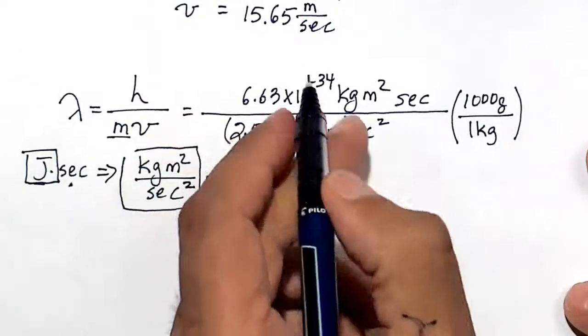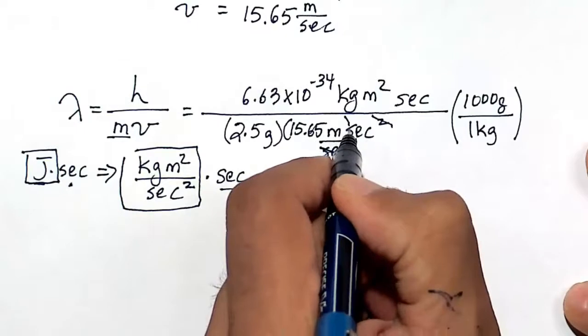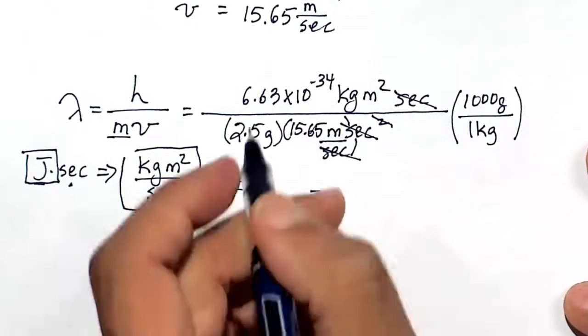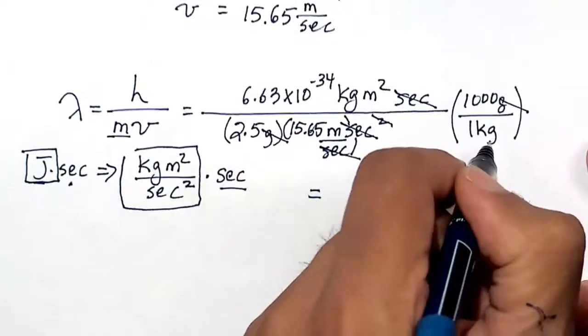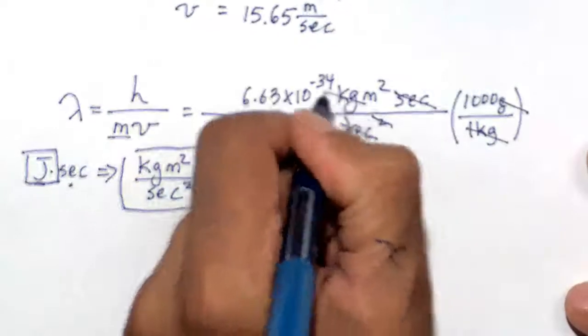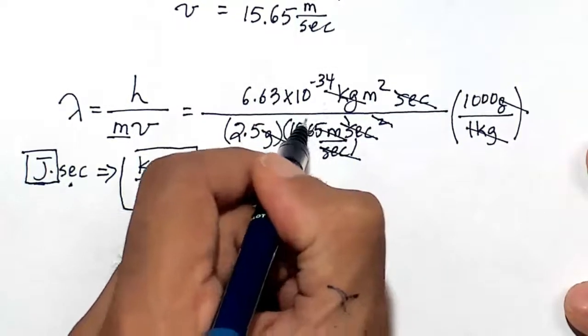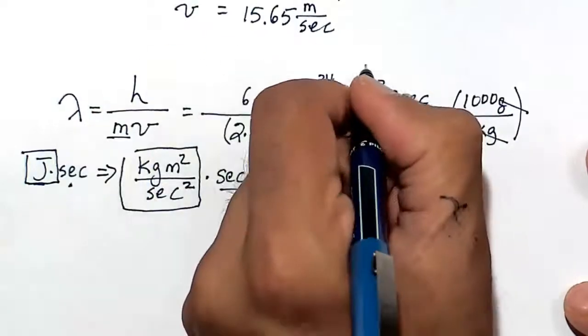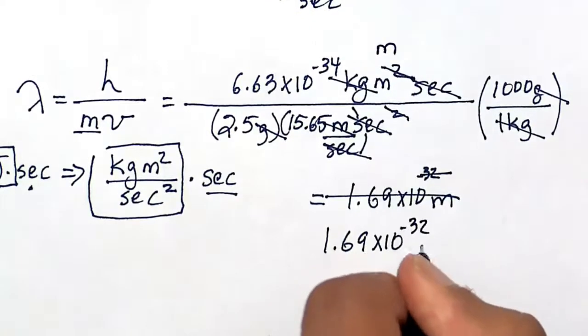When I do all of this on my calculator, first the units: this second cancels with that second, and this second cancels with the second on the numerator. This gram cancels with this gram. This kilogram cancels with this kilogram. One of these meters in the denominator cancels with one of the meters squared in the numerator, leaving me with meters. 1.69 times 10 to the minus 32 meters.